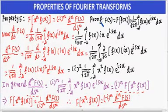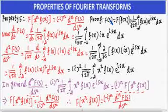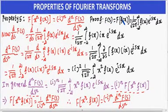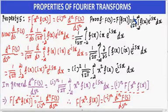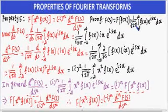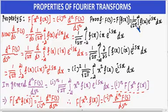Proof: We know the formula for the Fourier transform of any function f(x) is F(s) = (1 / √(2π)) · ∫ from -∞ to +∞ of f(x) · e^(isx) dx.